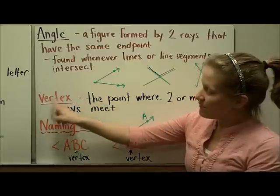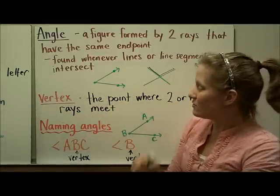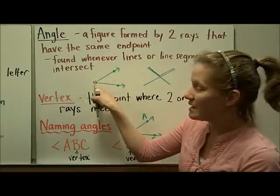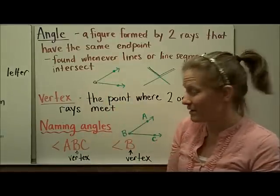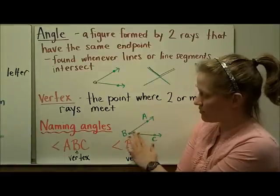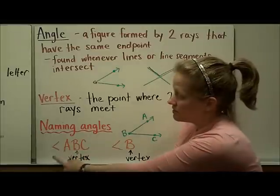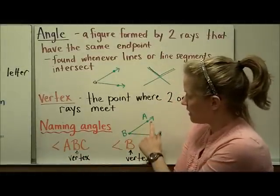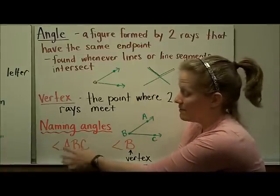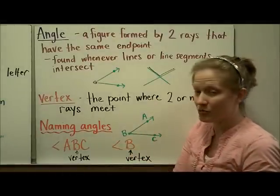We have a special name for the point where two or more rays meet — this is called the vertex of the angle. When we name an angle, it's important that you always put the vertex in the middle. So you can name this angle here as angle ABC, writing the B — the vertex — in the middle of our three letters. Or we could just name this angle simply by the vertex and call it angle B.